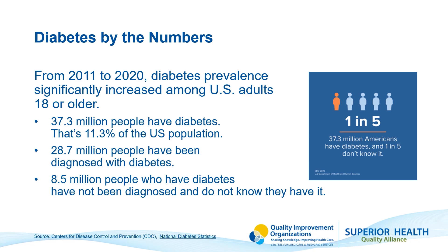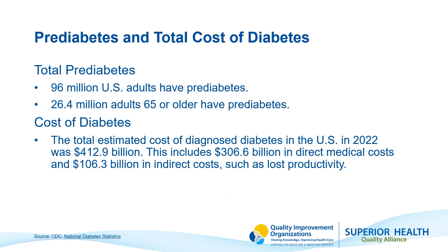Pre-diabetes is a condition where blood sugar levels are higher than normal but not yet high enough to be classified as type 2 diabetes. It serves as a warning sign that you have an increased risk of developing type 2 diabetes. There are typically no signs or symptoms with pre-diabetes, so it can go undetected unless you are looking for it.